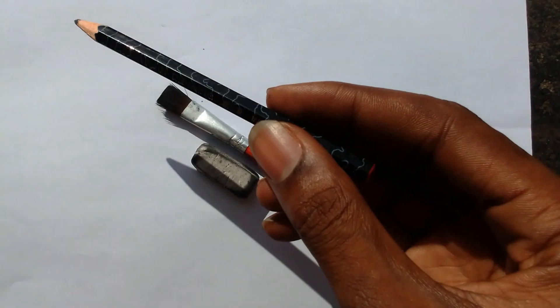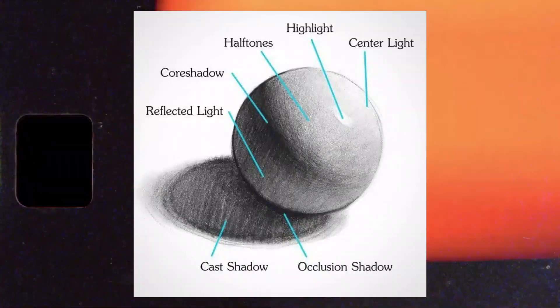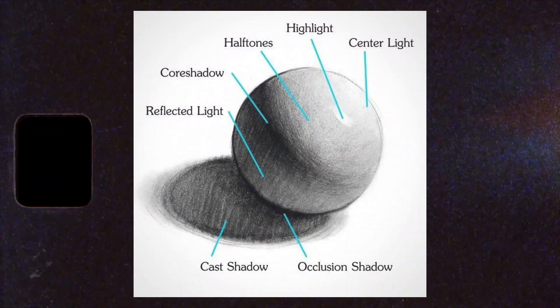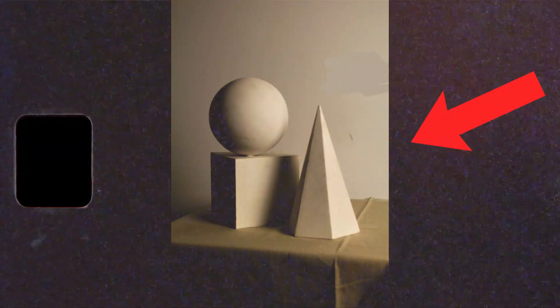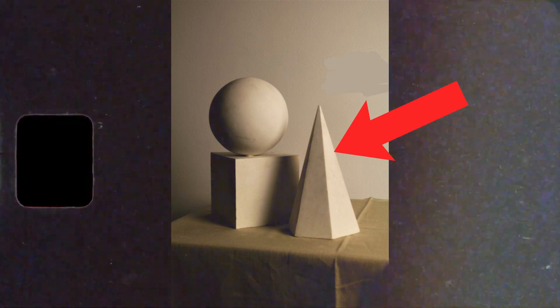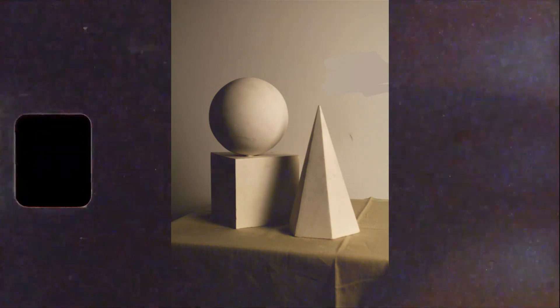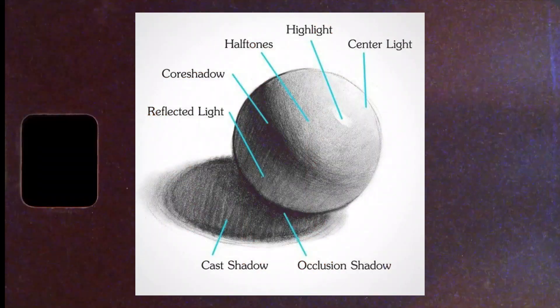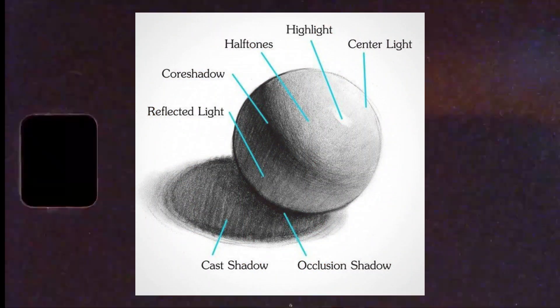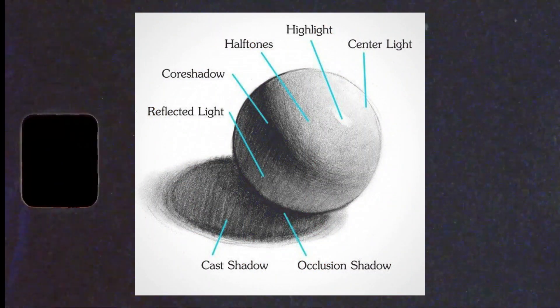First, before we get started, you're going to want to understand how light and shadow play a huge role in shading. If you take any object and you set it down, if light is coming, let's just say, from the right hand side, which means darkness is going to gradually be on the left side, obviously. But there are some concepts that you need to understand as an artist before you get into shading.